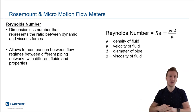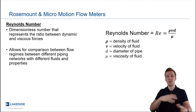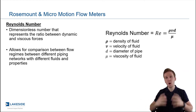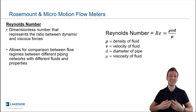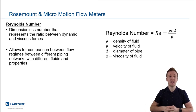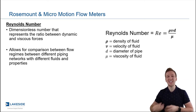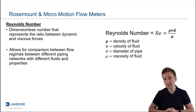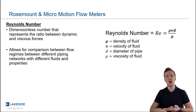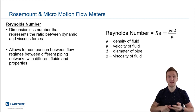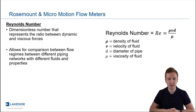Here's what the equation looks like. But for all intents and purposes, what we care about for the Reynolds number is it allows us to compare different flow regimes between different piping networks, and this allows us to get a better understanding of what the flow conditions are within that piping network. As you can see, it takes into account the density, the velocity, the diameter of the pipe, and the viscosity of the fluid — and that is ultimately the Reynolds number.